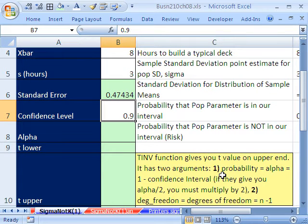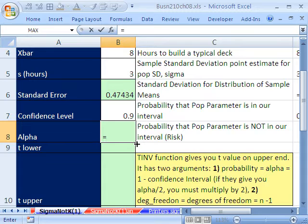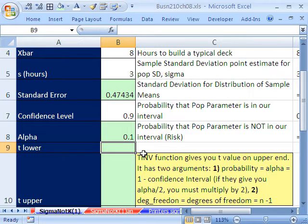0.47, that's in hours. That is for our sampling distribution standard error. Our confidence we're going to keep at 0.9, just like we did in our first one. Our alpha, we know by now that alpha is the risk that our population parameter is not in our interval. It's always going to be 1 minus whatever confidence interval. That's the probability, how confident we are about our population parameter being inside the interval.